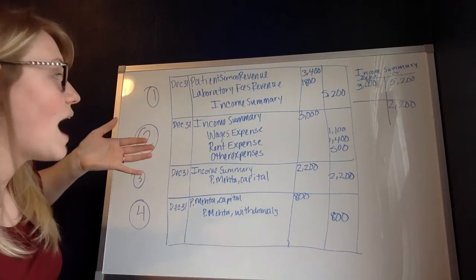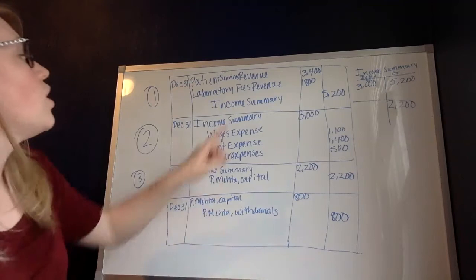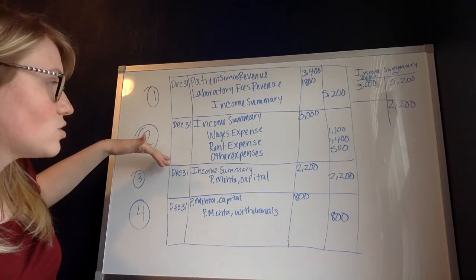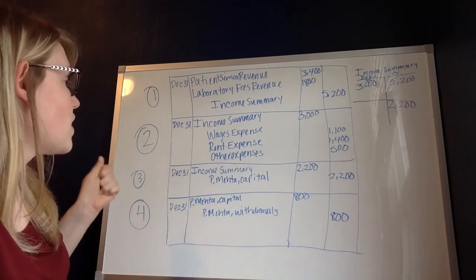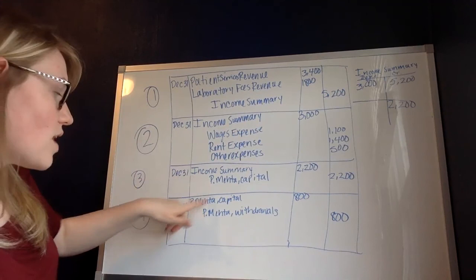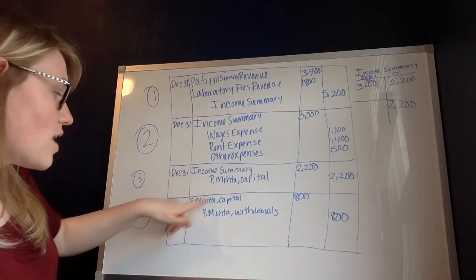To review: you start with your revenues — it's okay if you have more than one. You're debiting them to decrease them and bring those accounts to zero, and crediting your income summary. Second step, you're closing your expense accounts by debiting your income summary and crediting all of your expenses — there may be two, three, or six, it really just depends. Third step, you're closing your income summary account to the owner's capital. Fourth, you're closing the withdrawals to the owner's capital as well. That takes care of all of your closing entries, and once you've completed all four steps you're ready to move on.